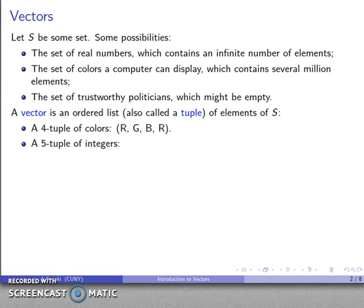We might take a five-tuple of integers—that's five integers in some particular order: minus one, two, five, negative one, and four. And then we may take a three-tuple of trustworthy politicians. Well, I can't think of any, but presumably they exist.